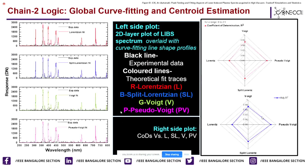Once the local maxima positions were accurately found, these values are used to initiate the curve fitting chain as initial guess values for effective global curve fitting. The left side layer plot shows the global curve fitting of sample 1 LIBS spectrum, where colored line profiles in red, blue, green, and purple are the theoretical fit traces obtained from Lorentzian, split Lorentzian, Voigt, and pseudo-Voigt line shape functions. The code was found to effectively fit the global LIBS spectrum. We extended the code to compute COD values for all four line shape functions.